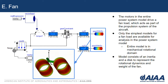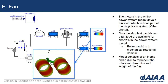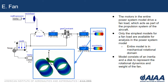Finally, we have the fan. The motors in the power system drive a fan load which acts as the propulsion system of the aircraft for the time being. Only the simplest models for fan load are available for analysis in the power system model. The entire model is in the mechanical rotational domain — it consists of an inertia and a disk to represent the rotational dynamics and weight of the fan. Another thing to note about Modelica is that we can animate these components, so for the fan we connect the gear constant disk to a pipe with scalar field, giving us a changing scalar field to animate the fan turning.